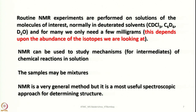The sample quantity required depends upon the abundance of the isotopes being examined. If the isotope is 100% abundant, a very small quantity is sufficient; if the percentage of NMR-active nuclei is small, more sample is needed. NMR can also be used to study mechanisms and to identify transient states or intermediates of chemical reactions in solution. In general, NMR is the most useful spectroscopic approach for determining the structure of molecules.